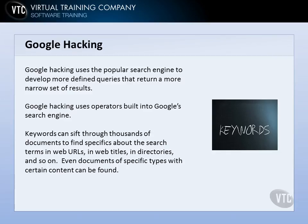You use these keywords and operators, and basically they can help you sift through thousands of documents to find very specific information about the search term you're looking for. These operators will help you look in web URLs themselves, also in the website titles. They'll help you find directories, sensitive information, and so forth. You can even find particular document types, like all PDFs on a site or all Word docs on a site.